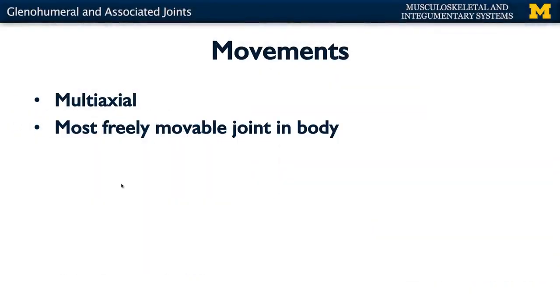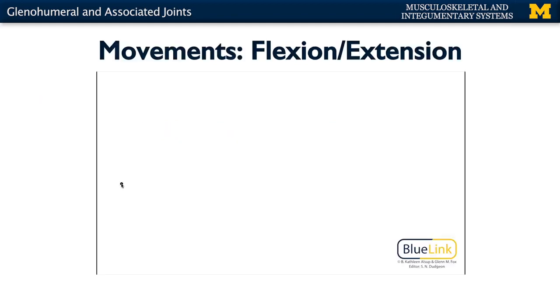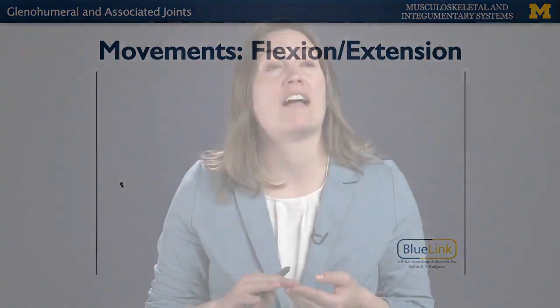In terms of the movements that can occur here, this is the most freely movable joint in the body, affording quite a few different types of movements. You're going to have flexion and extension, abduction and adduction, medial and lateral rotation, as well as circumduction. Basically, all the main movements that can occur at a synovial joint will occur here.